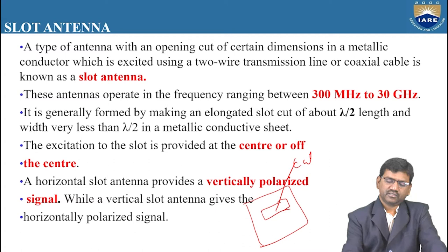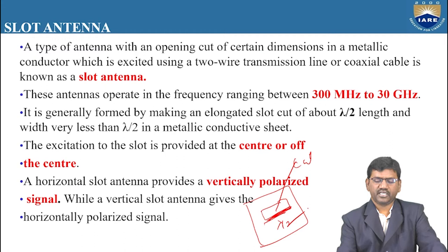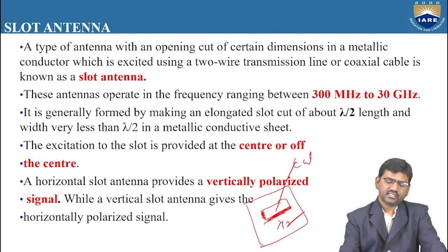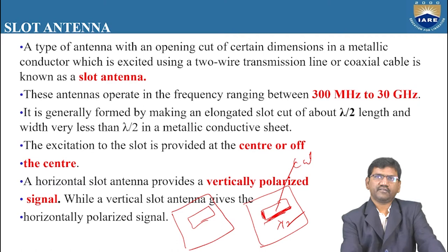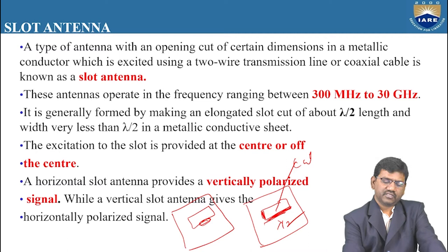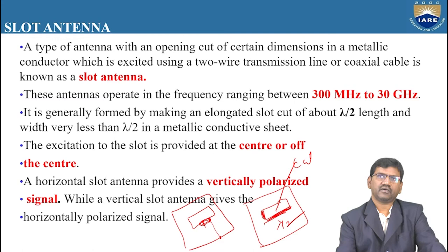The length of the slot is approximately λ/2 and the width is less than λ/2 in a metallic conducting sheet. The excitation to the slot is provided at the center. One conductor of the coaxial cable is connected to one portion of the slot, and the other conductor is connected to the conducting sheet. This is how to excite the slot antenna by means of the coaxial cable.